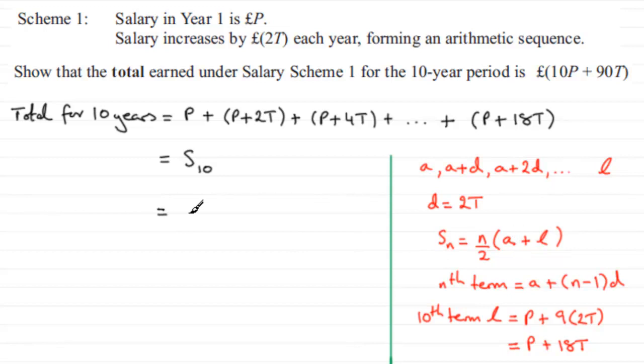So that will be n, n being 10 terms, 10 over 2 multiplied by the first term, which is p, plus the last term, l. And the last term is p plus 18T. So we've got p plus 18T.